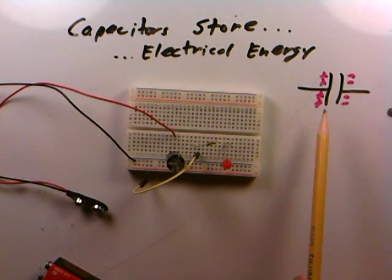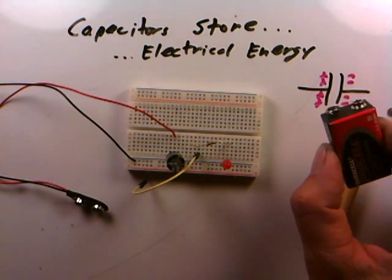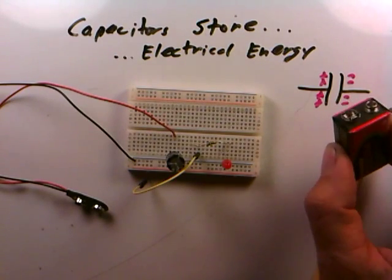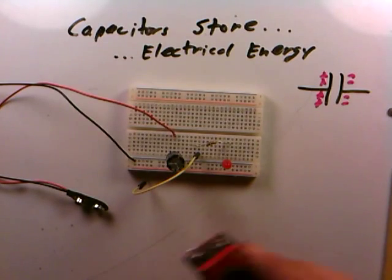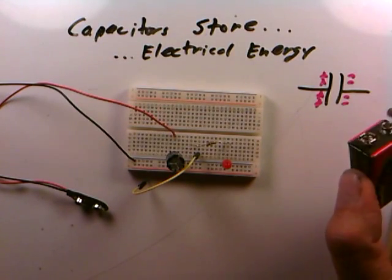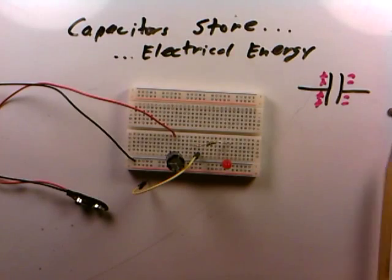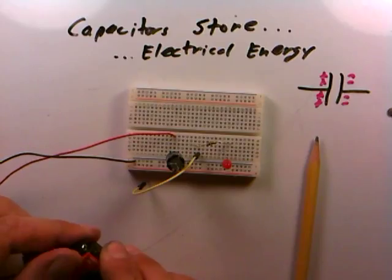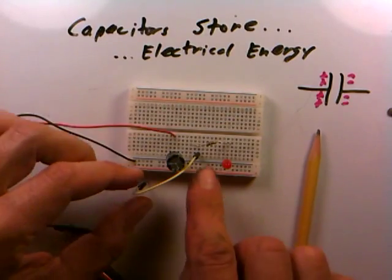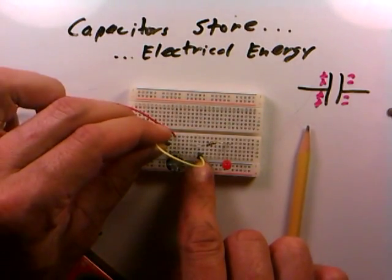But then what happens of course is this is a way that capacitors are different than batteries. The capacitor will eventually run out of charge. The battery will also run out of charge when it goes dead but they can last much longer here. And so, we see that the LED just can't sustain its brightness very long. So, if we charge it up, it's bright, nice and bright but it doesn't last very long because the capacitor just runs out of charge.